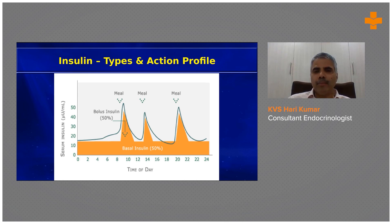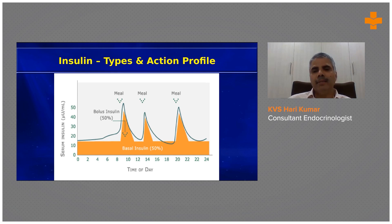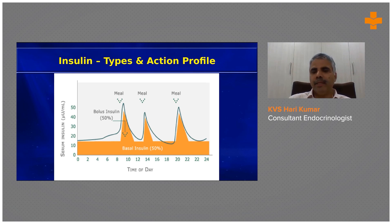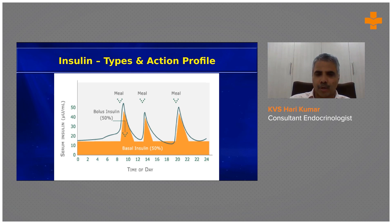You require both a basal and bolus component of insulin. Approximately 50% of the total insulin requirement is basal and 50% is bolus. The bolus component is subdivided between three meals, depending on the ratio of food intake — whether the major meal is in the morning or afternoon. This is the basic framework for how much and what type of insulin to use.